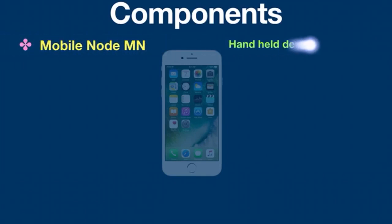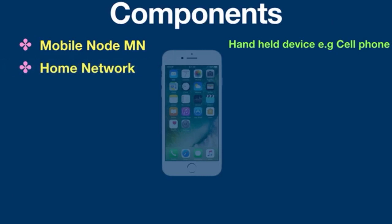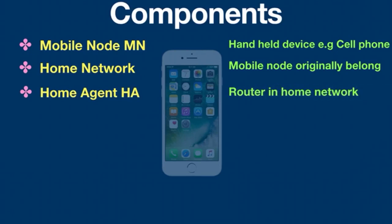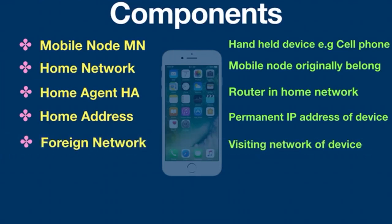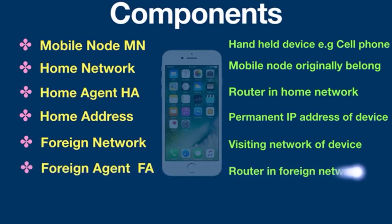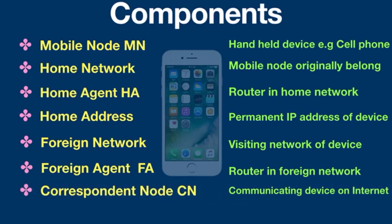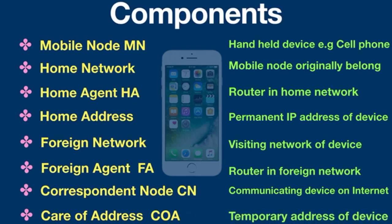Let's talk about the components of Mobile IP. Mobile Node: it is the handheld communication device that the user carries, for example a mobile phone. Home Network: it is the network to which the mobile node originally belongs. Home Agent: it is a router in the home network to which the mobile node was originally connected. Home Address: it is the permanent IP address assigned to the mobile node. Foreign Network: it is the current network that the mobile node is visiting. Foreign Agent: it is a router in the foreign network to which the mobile node is currently connected. Correspondent Node: it is a device on the network communicating with the mobile node. Care-of Address: it is the temporary address used by a mobile node while it is moving away from its home network.